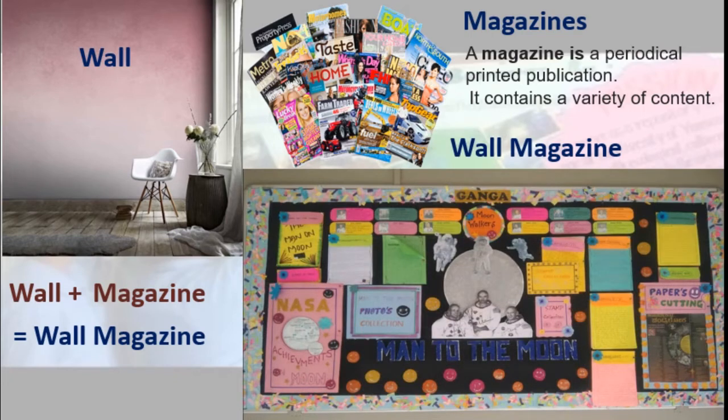Here the different contents you can see on the wall, like a magazine. How we get variety of contents in the magazine? Like that, we got the variety of contents on the wall. So this is called a wall magazine.